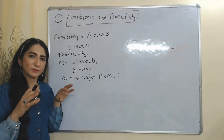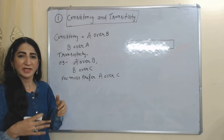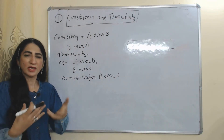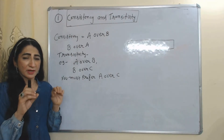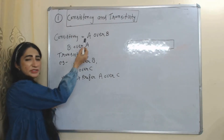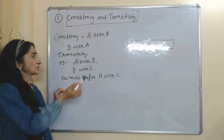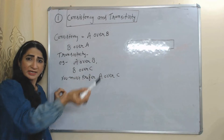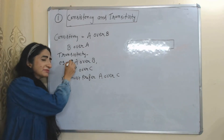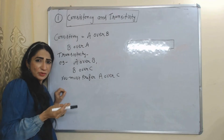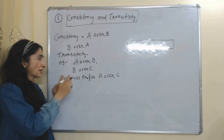The first condition is consistency and transitivity. Consistency means the quality of always having the same standard. For example, in one situation you like A over B, but in another situation you like B over A — that means your behavior is not consistent.